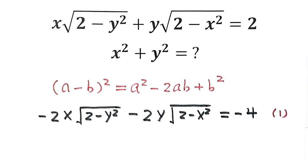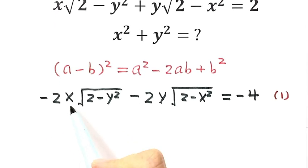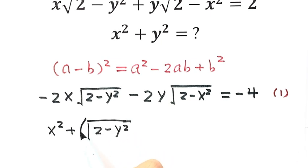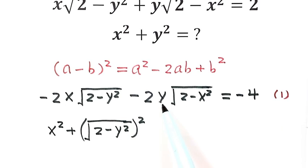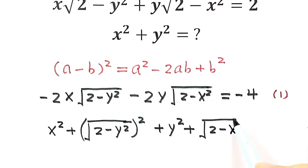In order to make a complete square with the cross term, we need x squared and the square root of (2 minus y squared) whole thing squared. Similarly, to complete the square with the other cross term, we need y squared plus the square root of (2 minus x squared) whole thing squared.